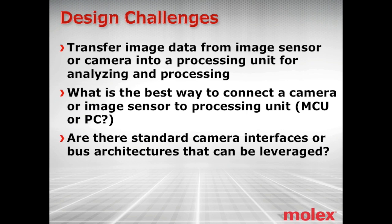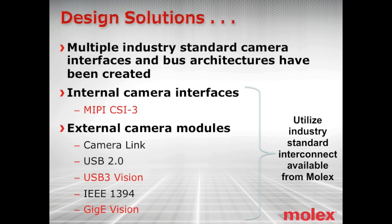To answer these challenges, multiple industry standard camera interfaces and bus architectures have been created. For chip-to-chip communication or between an image sensor and MCU, internal camera interfaces such as MIPI CSI-3 are used — MIPI stands for Mobile Industrial Processor Interface, with CSI referring to the camera interface specification. For external camera modules connecting to a PC, you might use Camera Link, USB 2.0, USB 3.0 Vision, IE 1394, or GigE Vision. We'll discuss the highlighted solutions in more detail.